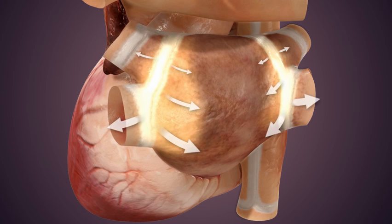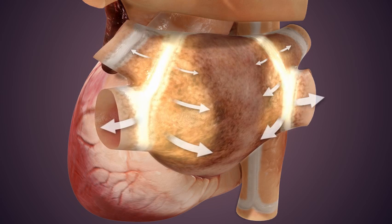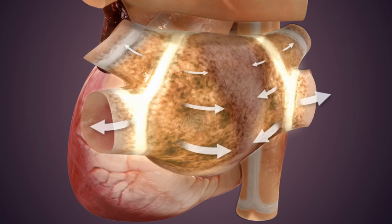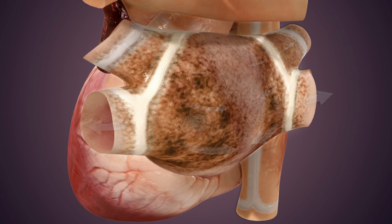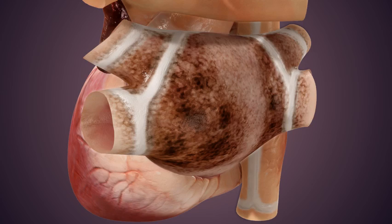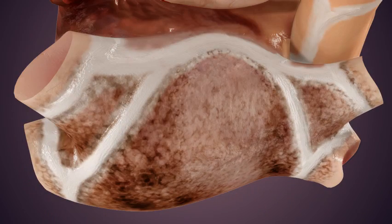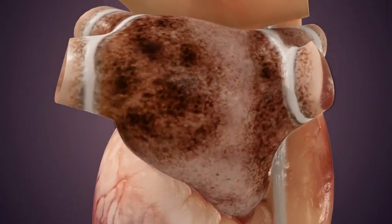These high stresses cause your left atrium to stretch and grow larger. This can lead to inflammation, and your body produces collagen to reinforce the heart. Collagen leads to the formation of fibrosis, seen here as dark patches on your heart's posterior wall. Over time, fibrosis becomes extensive, covering a substantial portion of your posterior left atrium.